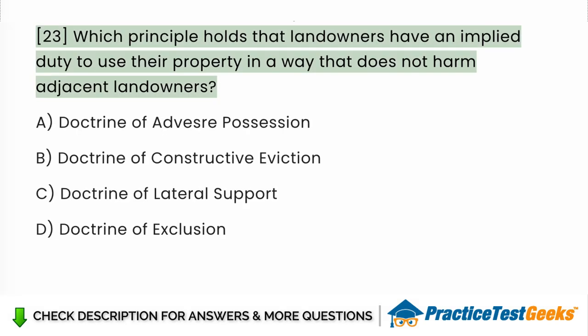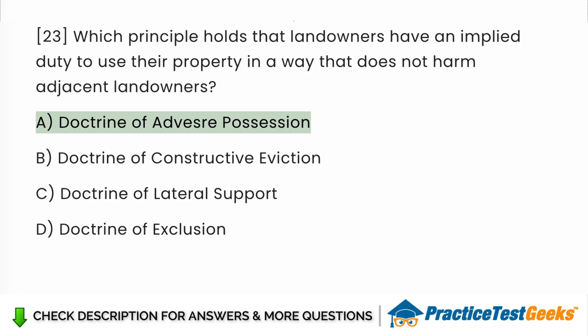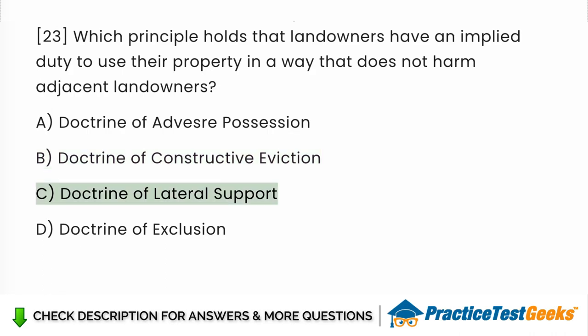Which principle holds that landowners have an implied duty to use their property in a way that does not harm adjacent landowners? a. Doctrine of adverse possession. b. Doctrine of constructive eviction. c. Doctrine of lateral support. d. Doctrine of exclusion.